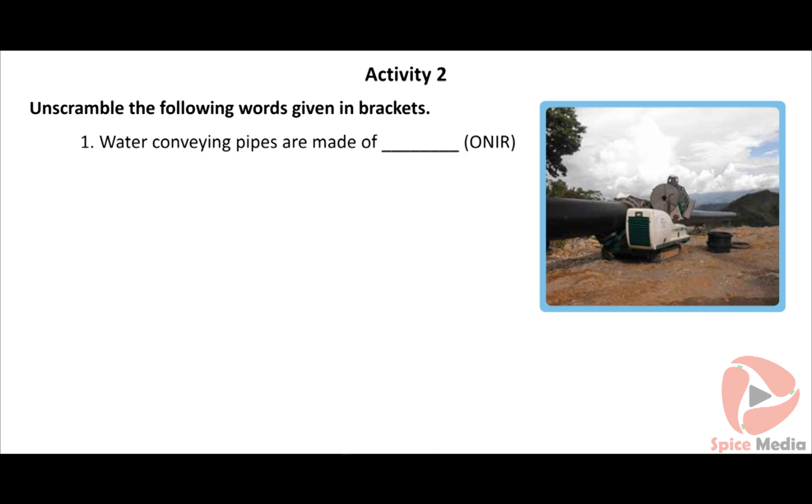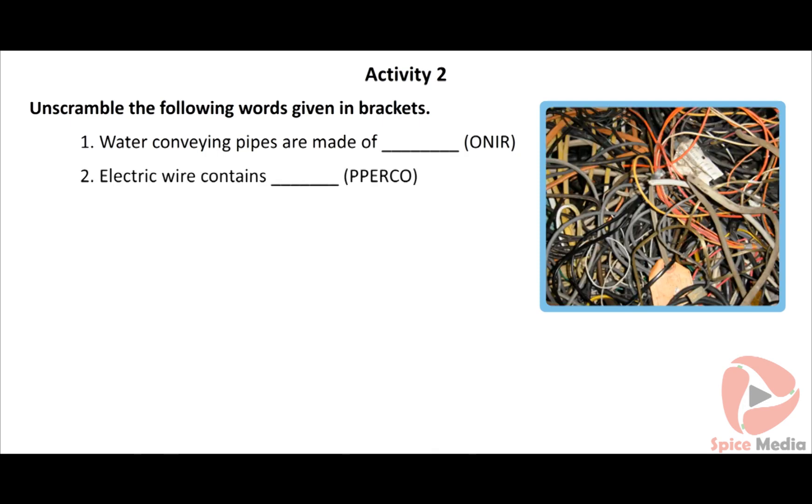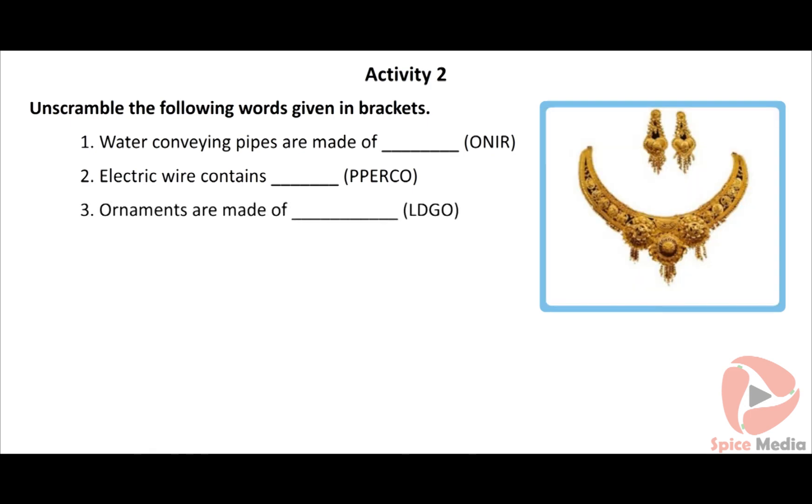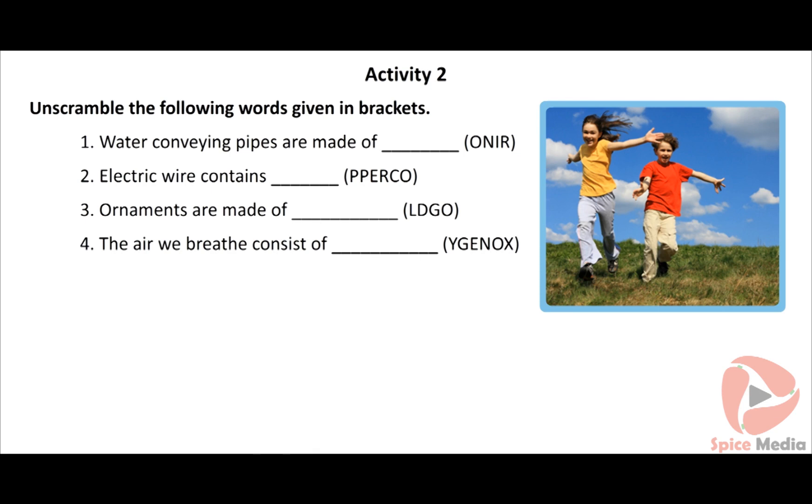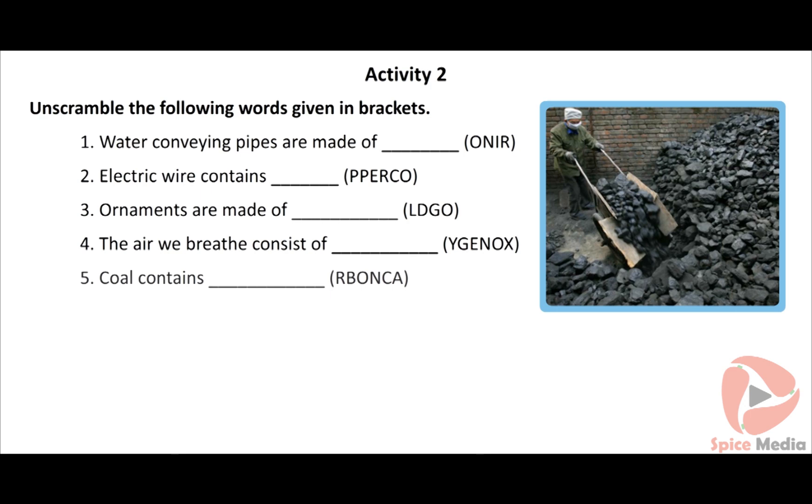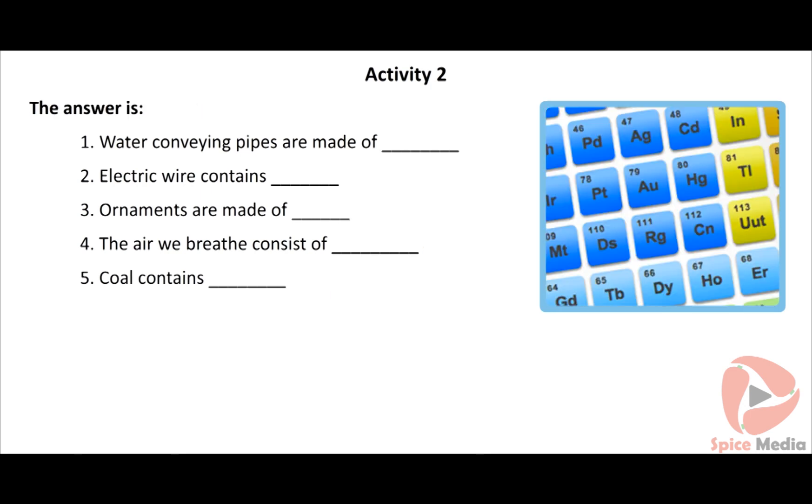Unscramble the following words given in the brackets: Water conveying pipes are made up of O-N-I-R, electric wire contains P-P-E-R-C-O, ornaments are made of L-D-G-O, the air we breathe consists of Y-G-E-N-O-X, coal contains R-B-O-N-C-A. The answers are: Water conveying pipes are made of iron, electric wire contains copper, ornaments are made of gold, the air we breathe consists of oxygen, coal contains carbon.